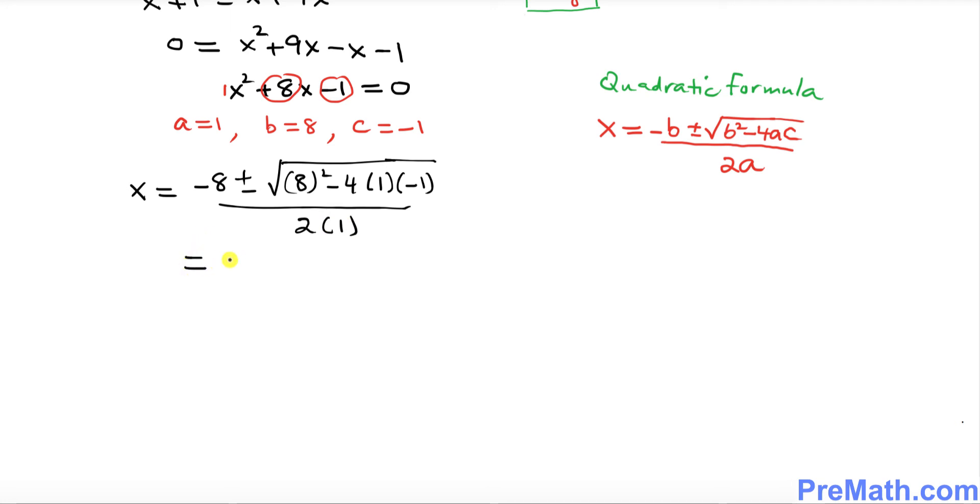Let's simplify this: -8 ± √(64 + 4) over 2, which gives us -8 ± √68 over 2.